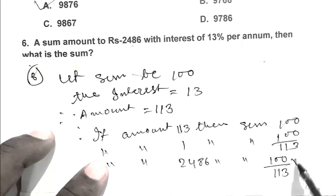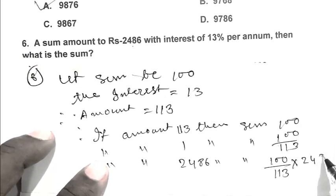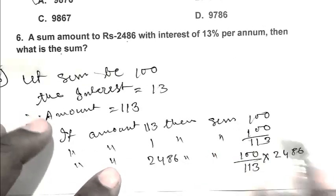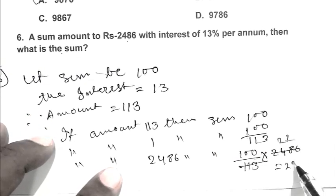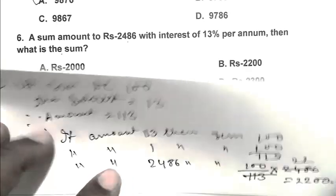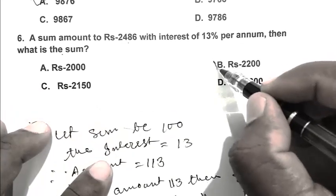If amount is 2486, then sum is 100 upon 113 multiplied by 2486, which gives us 2200. So B is the right answer.